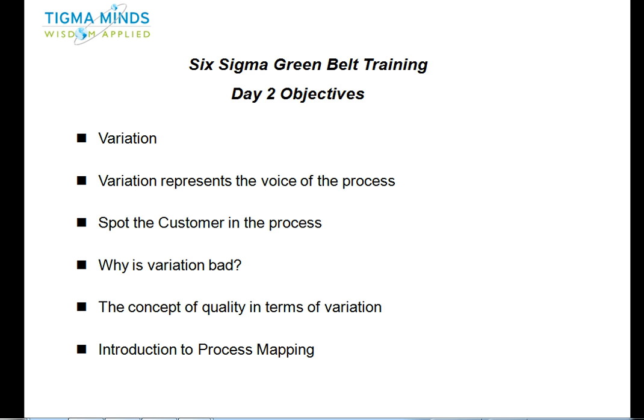Then we are going to introduce you to process mapping, which is key to understanding current processes and is also very important for analyzing what's going wrong in a specific process. We're going to use it over and over again as we go forward in our Six Sigma journey.